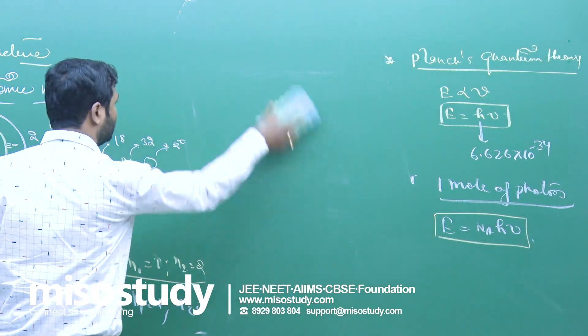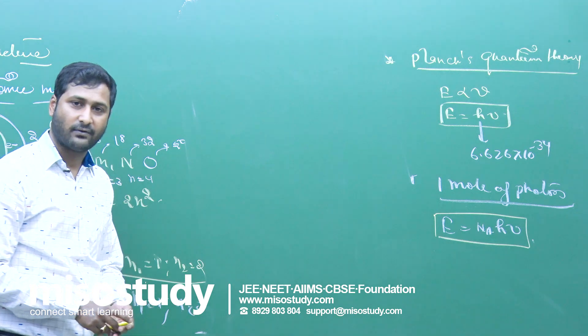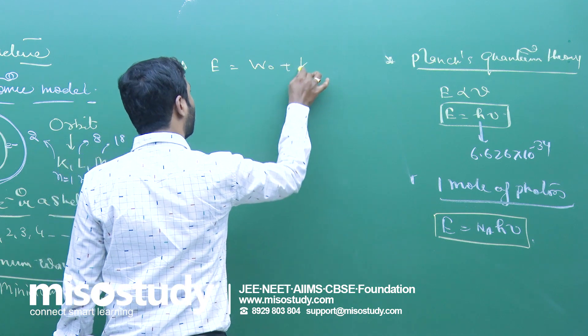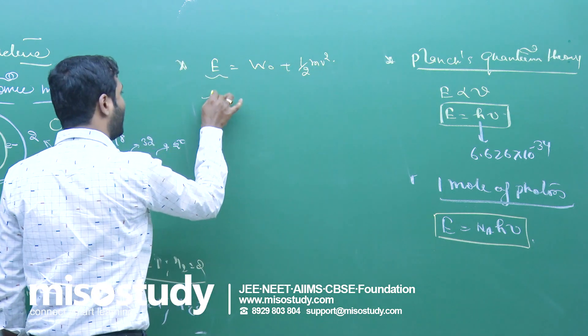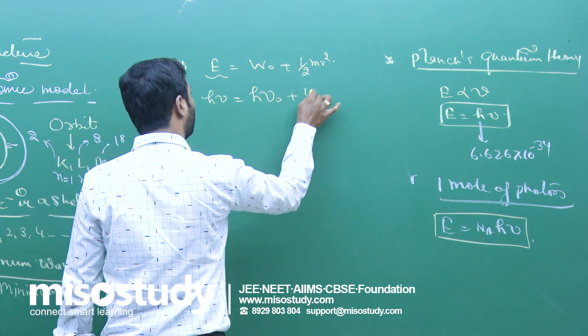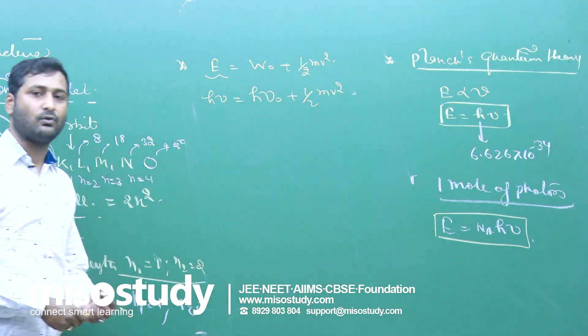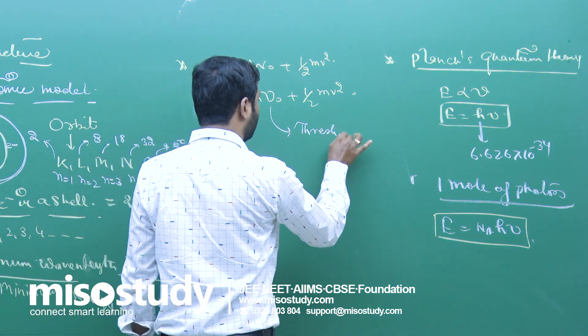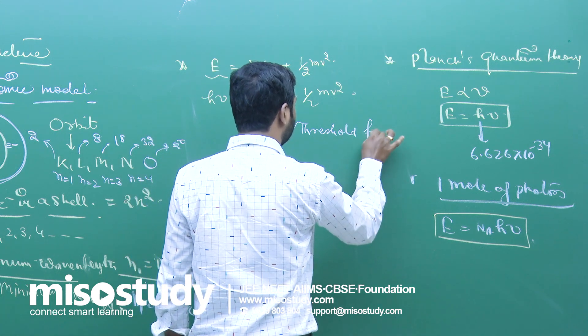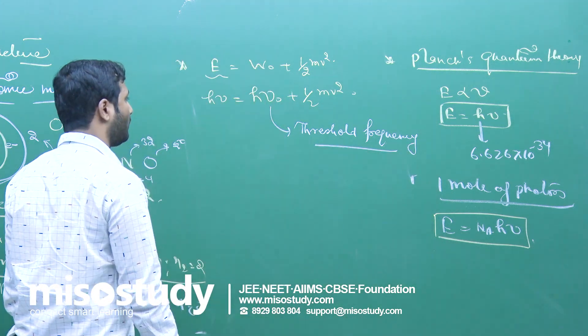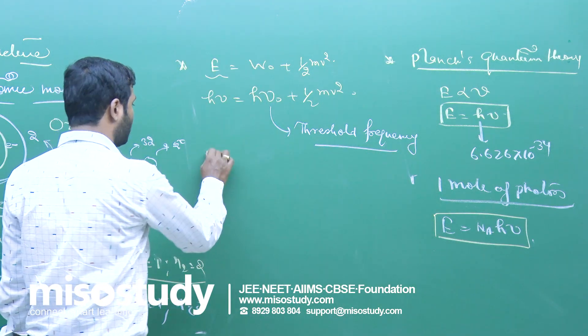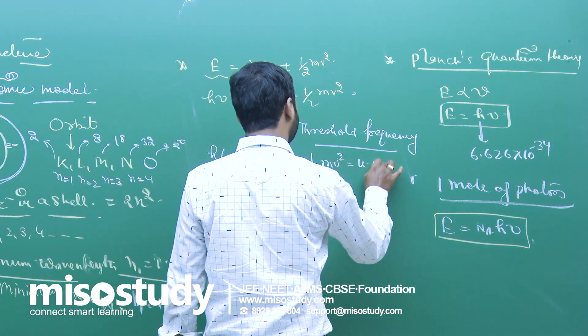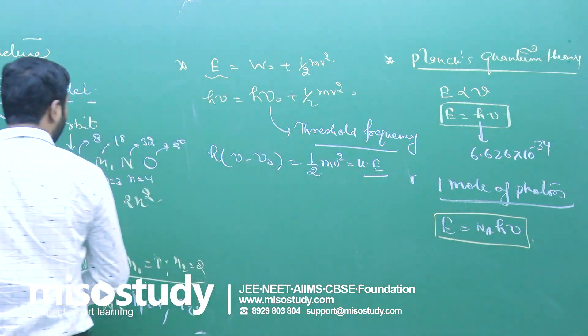The next one we have is photoelectric effect. Einstein's photoelectric equation. We know E equals w₀ plus half mv². That is kinetic energy. hν equals hν₀ plus half mv². What is ν₀? ν₀ is the frequency called threshold frequency. So hν minus hν₀ equals half mv² equals kinetic energy.